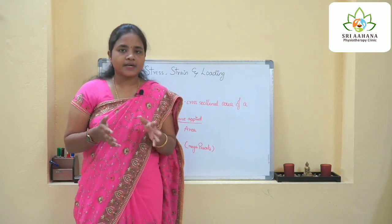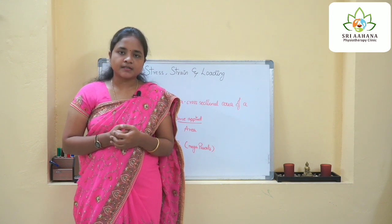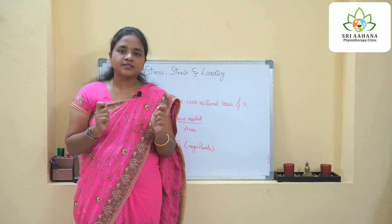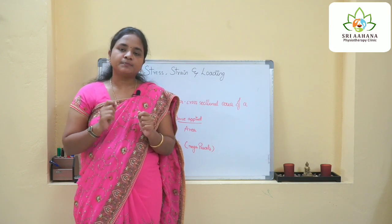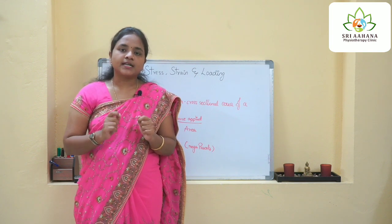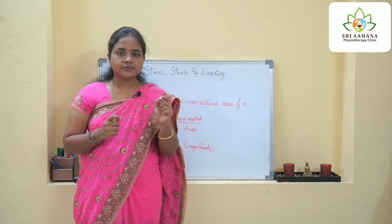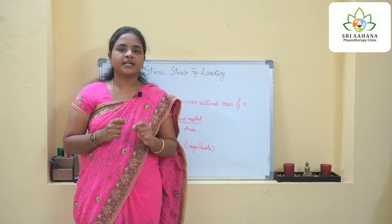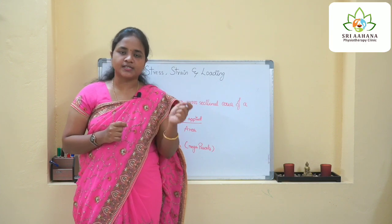Coming to the topic of strain — strain is nothing but the change in length that will be produced in an object when it is subjected to an external force. The percentage of change in length that an object undergoes is called strain, and it is measured with the formula: strain equals L2 minus L1 divided by L1, where L2 is the new length and L1 is the original length.